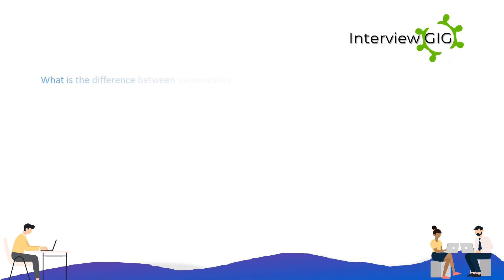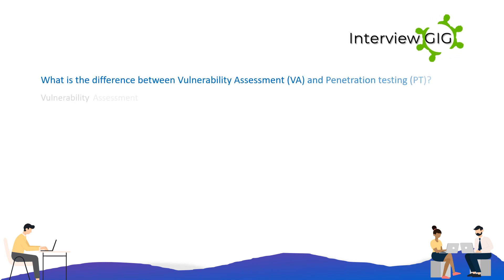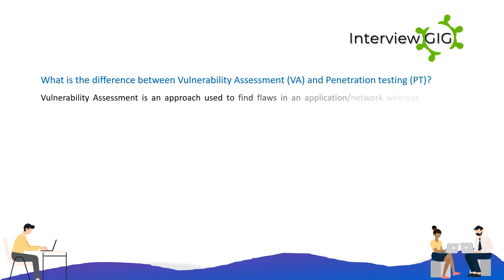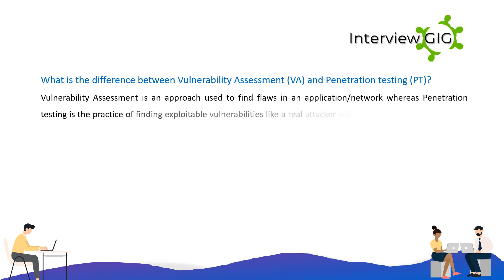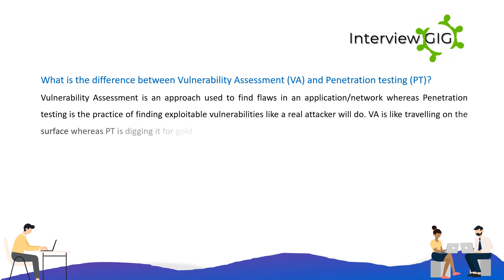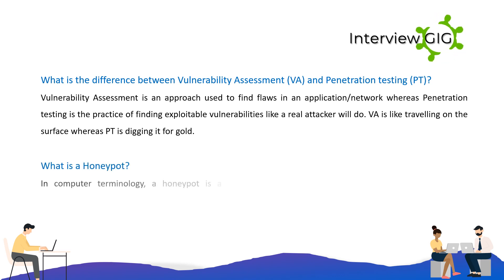What is the difference between vulnerability assessment (VA) and penetration testing (PT)? Vulnerability assessment is an approach used to find flaws in an application or network, whereas penetration testing is the practice of finding exploitable vulnerabilities like a real attacker would. VA is like traveling on the surface, whereas PT is digging it for gold.